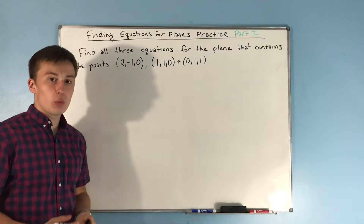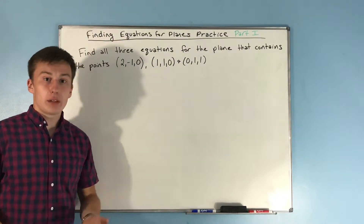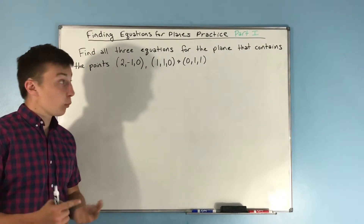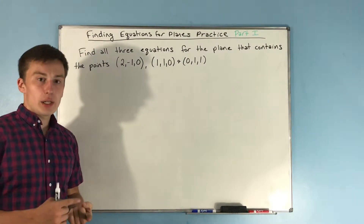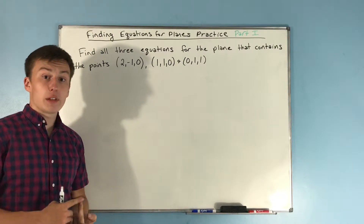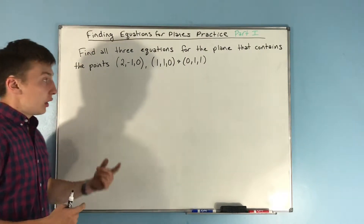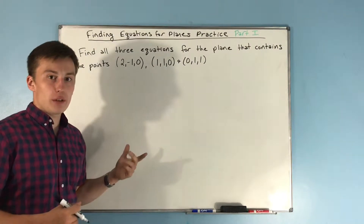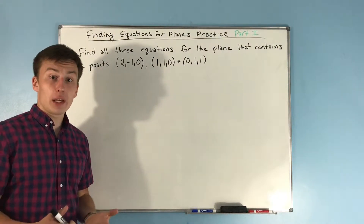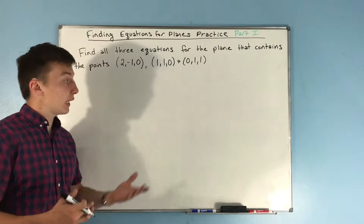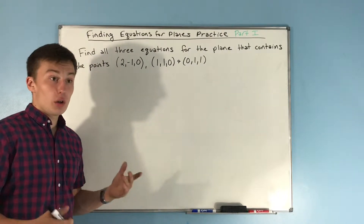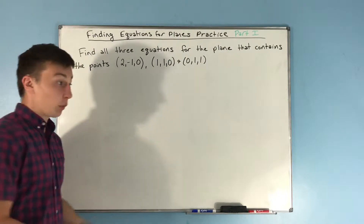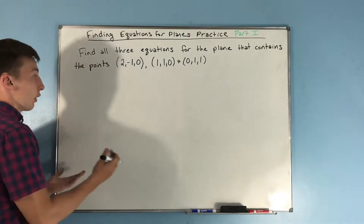The first thing we need to do: what do we need for a plane? We need a point on the plane — we have three — and we need a vector that's normal to the plane. To find that, we need to find two vectors that are on the plane and then take the cross product, because we're not given a normal vector here. We're given three points, so we need to find two vectors that are on this plane.